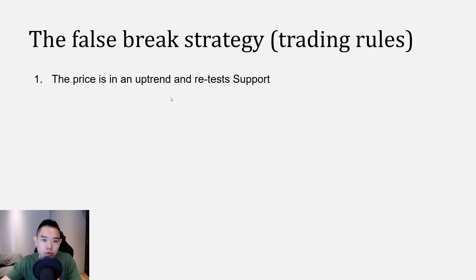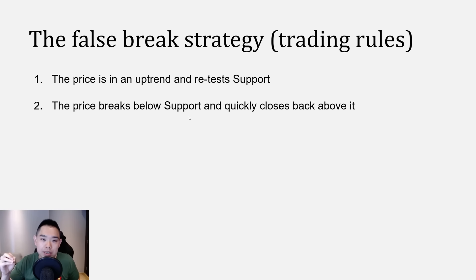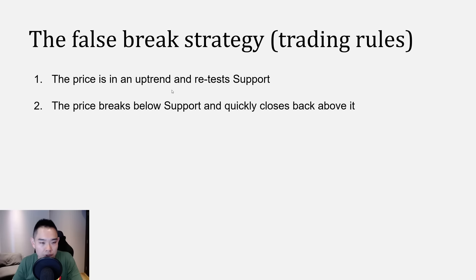In this long trade example: number one, you're looking for the price to be in an uptrend and then retest an area of support. Number two, the price breaks below support but quickly closes back above it. This is significant because it tells you the market couldn't find selling pressure below support — no one wants to short below support. Instead, buyers are stepping in to push the price higher. Plus, you are trading in the direction of the trend, so this puts the odds in your favor.